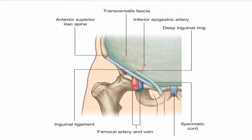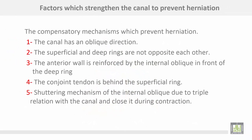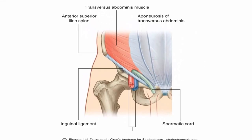Here is the fascia transversalis, the deep inguinal ring within it, and the entrance of the spermatic cord. Factors which strengthen the canal to prevent herniation: number one, the canal has an oblique direction. Number two, the superficial and deep rings are not opposite each other. The anterior wall is reinforced by the internal oblique in front of the deep ring. The conjoined tendon is behind the superficial ring. The shutter mechanism of the internal oblique, due to its triple relation with the inguinal canal, closes the canal during contraction of the internal oblique muscle.